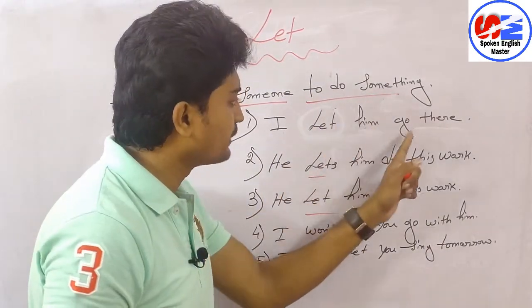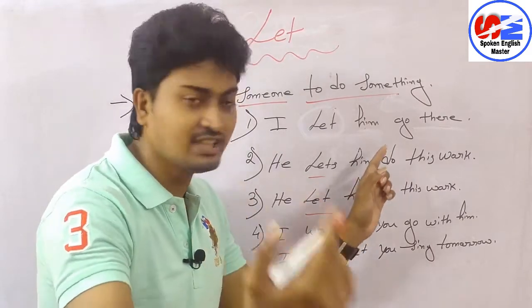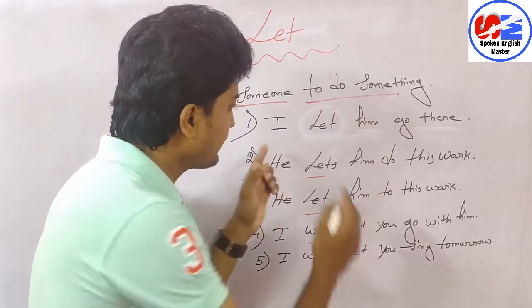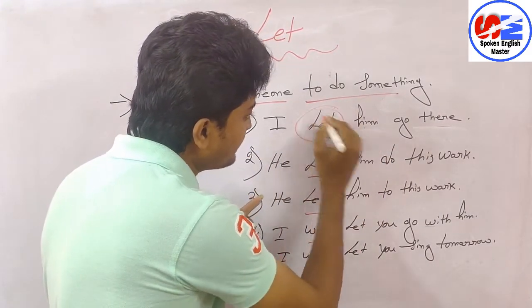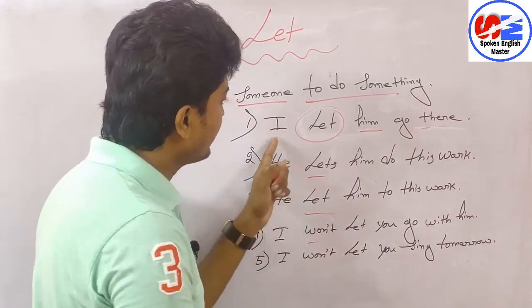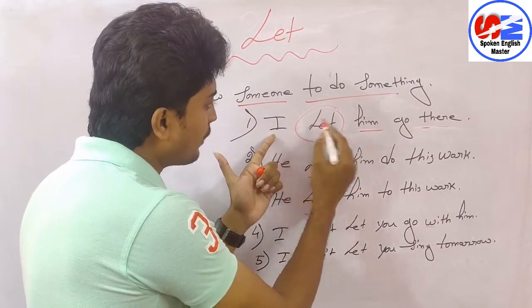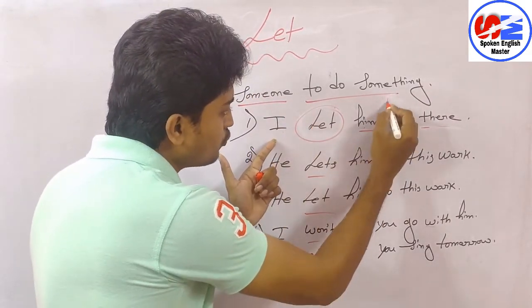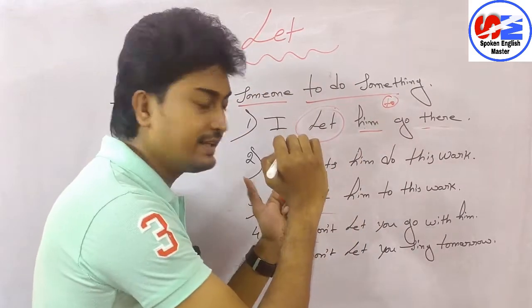Number one example: 'I'll let him go there.' [Hindi: Main usse wahaan jane deta hoon.] So here instead of LET we can also use ALLOW: 'I'll allow him to go there.' So here we add 'to' when we use ALLOW.